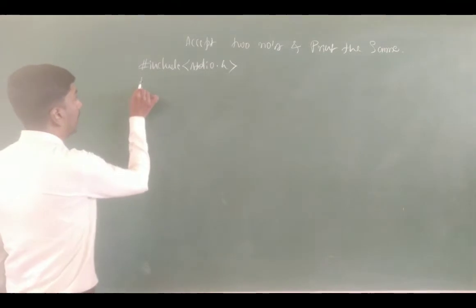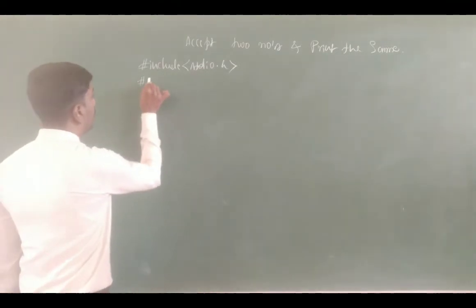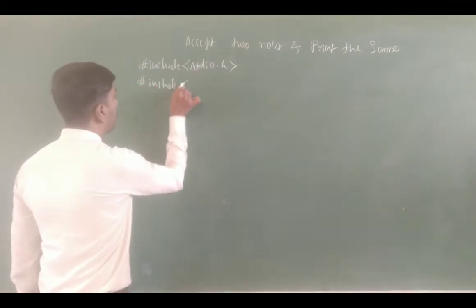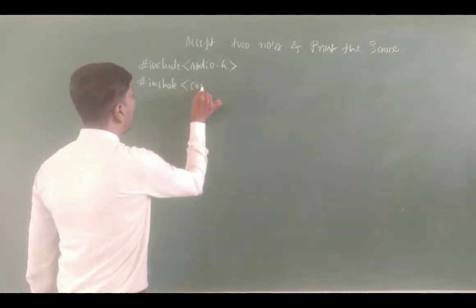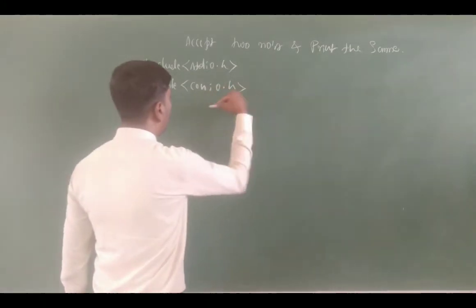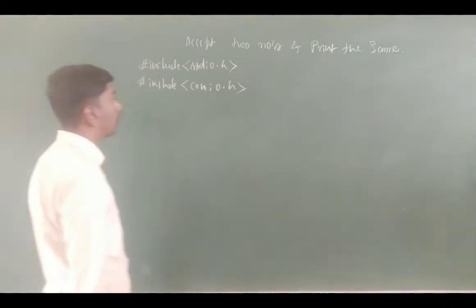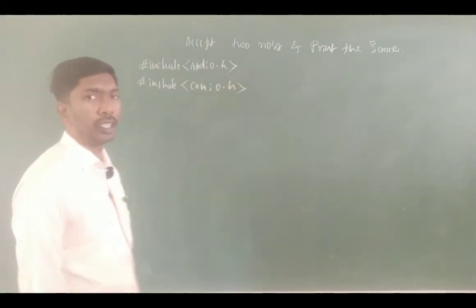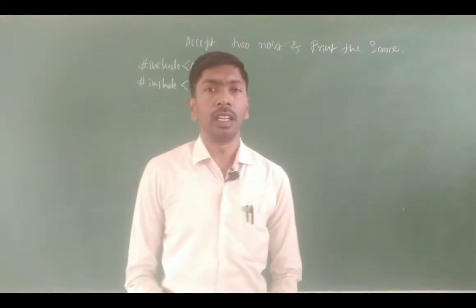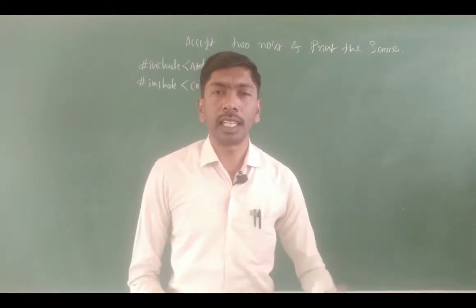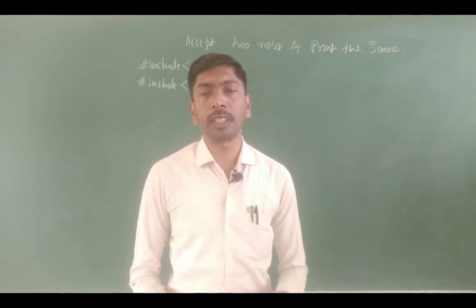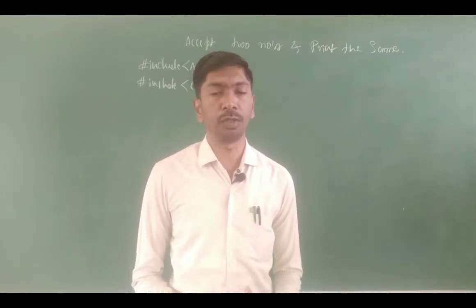You also have to use another header file: #include conio.h — console input output header file. We use clrscr() and getch() from this header file.